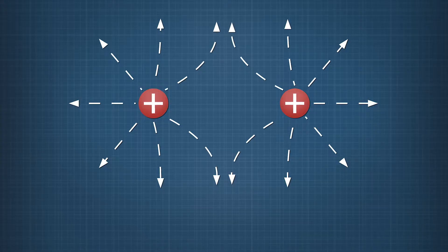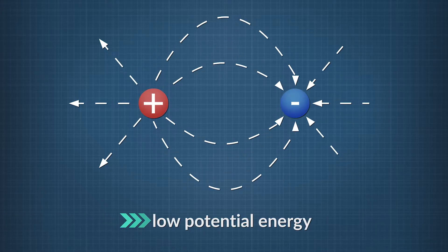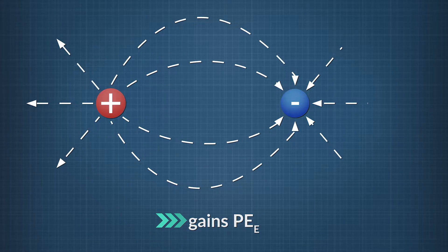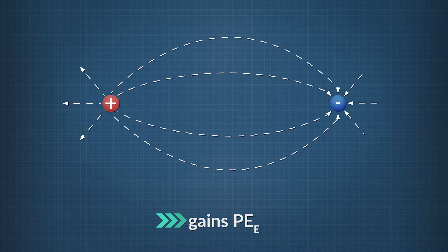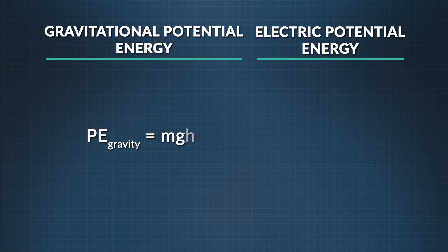Now let's look at what happens to electric potential energy in different scenarios. A positive charge near another positive charge has high potential energy. A positive charge near a negative charge has low potential energy. A positive charge gains electric potential energy when it is moved in a direction opposite the electric field. A negative charge gains electric potential energy when it is moved in the same direction as the electric field. Those are the basics of electric potential energy, which has a strong resemblance to gravitational potential energy.